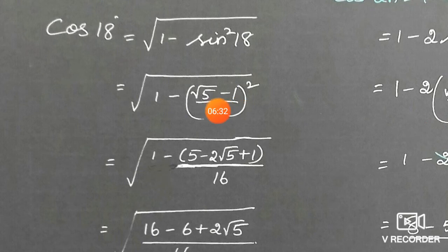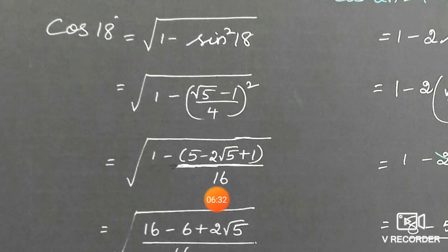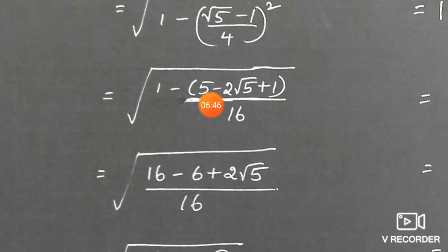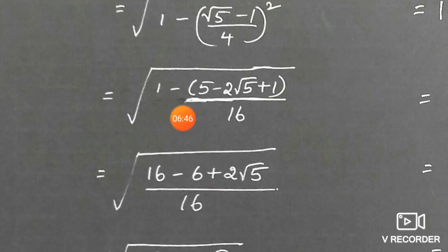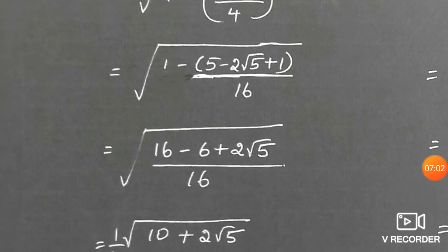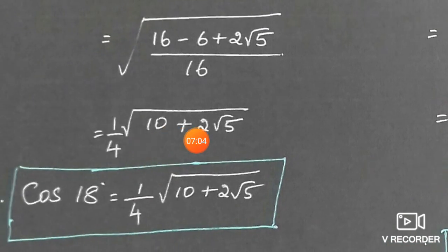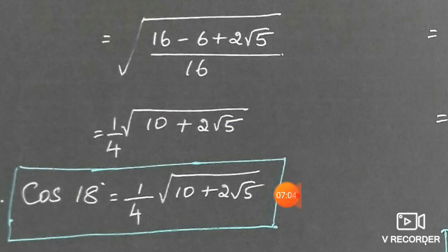Expanding (√5 − 1)² / 16 using (a − b)² = a² − 2ab + b²: numerator = 5 − 2√5 + 1 = 6 − 2√5. So cos²18° = 1 − (6 − 2√5)/16 = (16 − 6 + 2√5)/16 = (10 + 2√5)/16. Taking the square root: √((10 + 2√5)/16) = √(10 + 2√5) / 4. Therefore, cos 18° = (1/4)√(10 + 2√5).